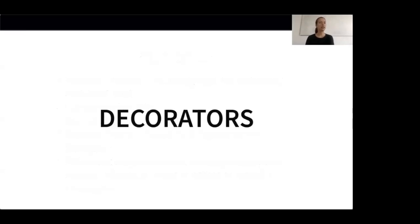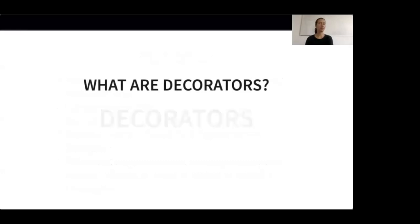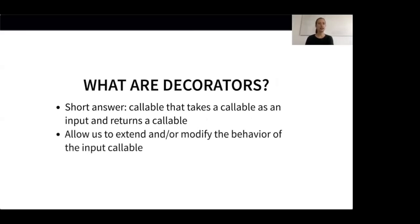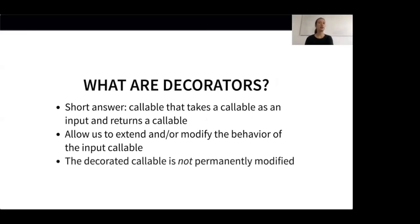Let's continue our journey with a concept probably most of you have heard of: decorators. Decorators are an advanced concept which can be a bit difficult to understand in the beginning, so don't worry if you don't immediately understand how they work. In simple terms, a decorator is a callable that takes a callable as an input and returns a callable. Typically when talking about callables, we mean functions — though you could equally decorate any other callable, for example a callable class. Decorators allow us to extend and/or modify the behavior of the callable they take as an input, and they do that without permanently modifying the input function or class itself. The behavior is changed only when it's decorated.